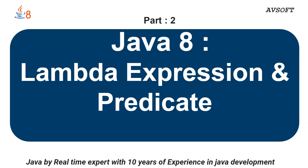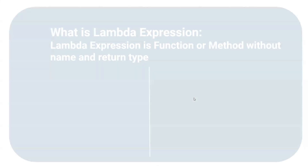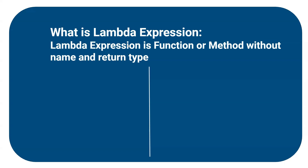Let's start with the lambda expression and the functional interface Predicate. First, let's see what a lambda expression is. The definition: a lambda expression is a function or method without a name and return type.